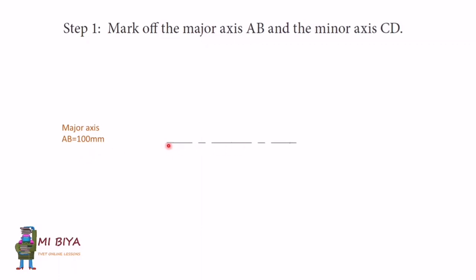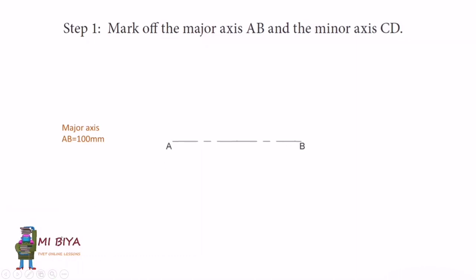As you can see, I've already drawn the major axis, which is A-B. Please note that the reason why we draw this as a center line is because it represents the center. So this line is also our center line at the same time. Point O represents our center.